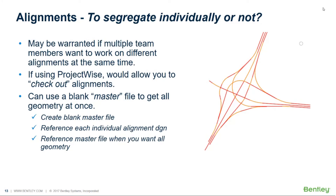The question of whether to segregate even further will come up. For an interchange job with multiple alignments, you may consider putting each alignment in an individual file — rampA.dgn, rampB.dgn, and so on. This may be warranted if multiple team members need to work on different alignments simultaneously. In ProjectWise, this also allows you to check out individual files. You can always use a blank master or container file to get all the geometry at once, which we'll show shortly.